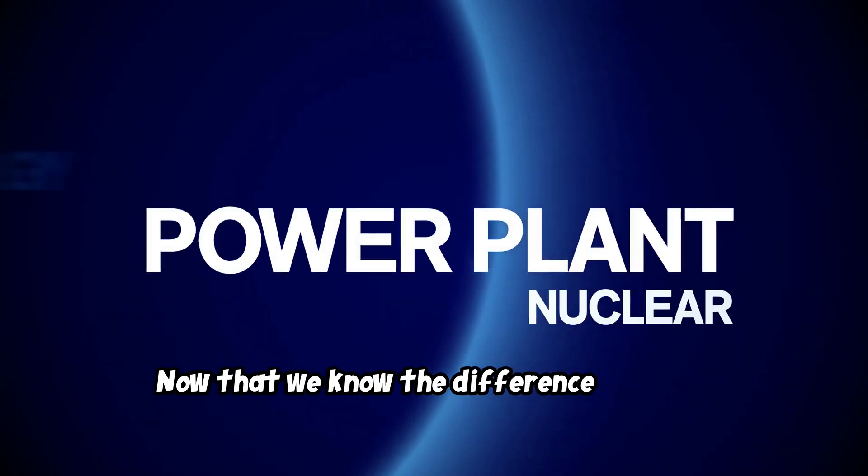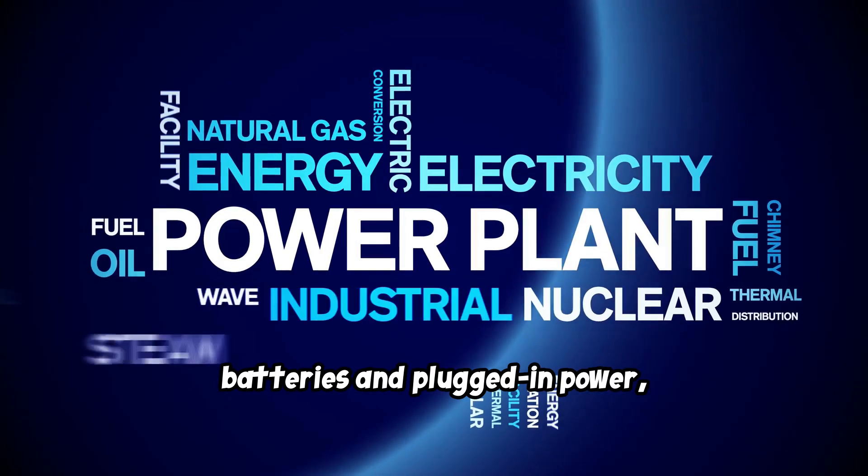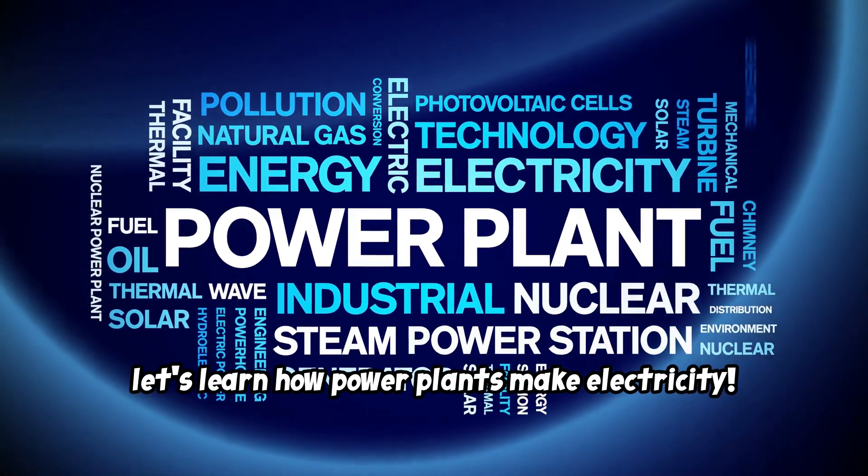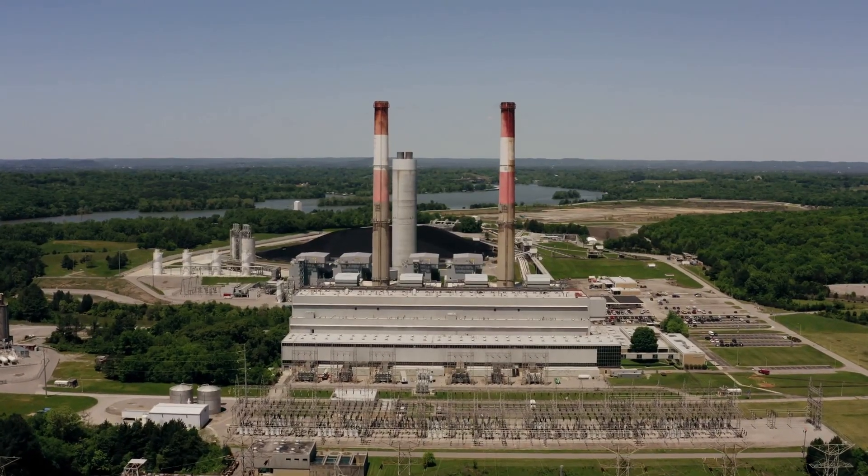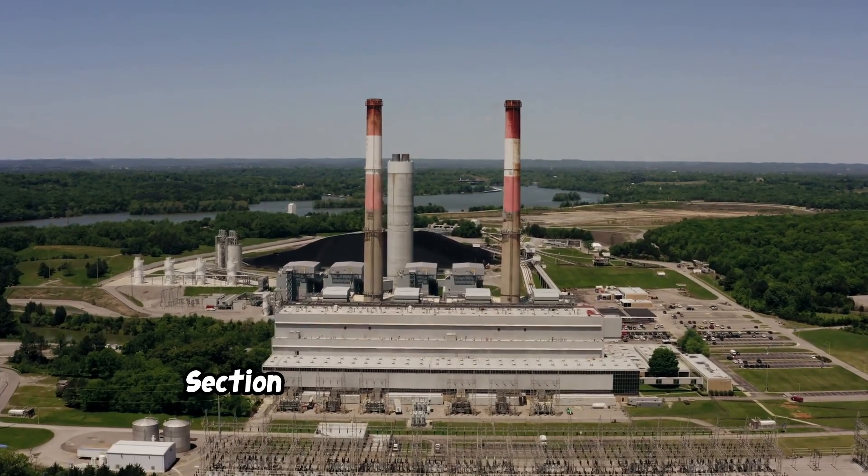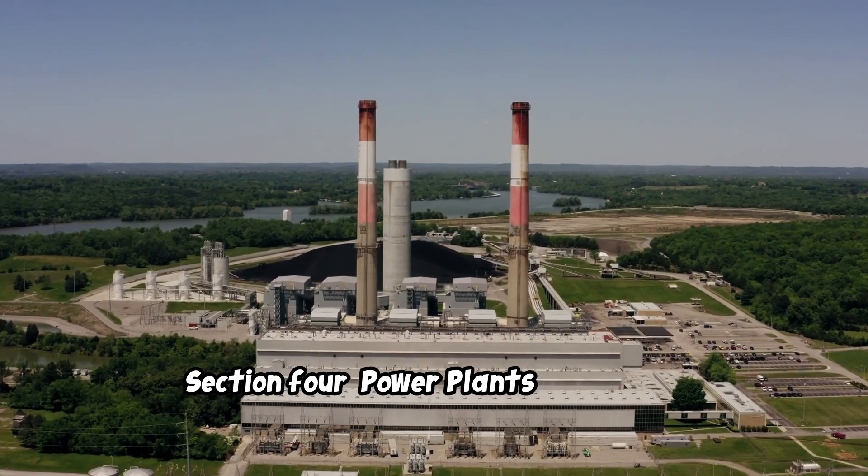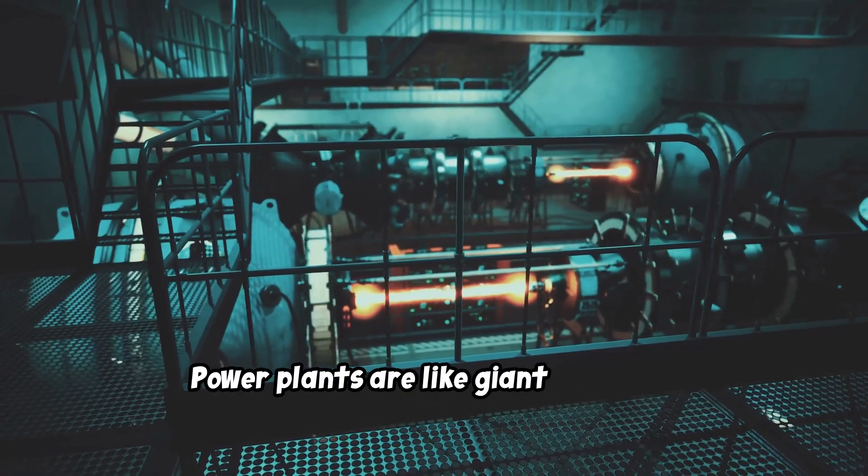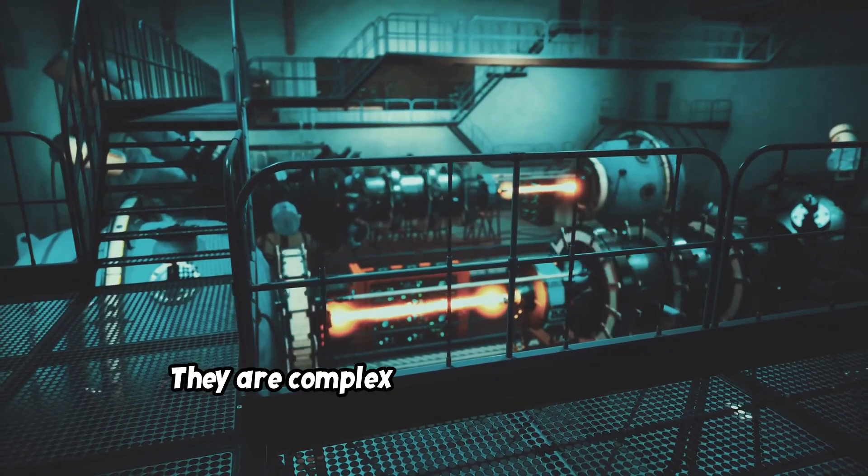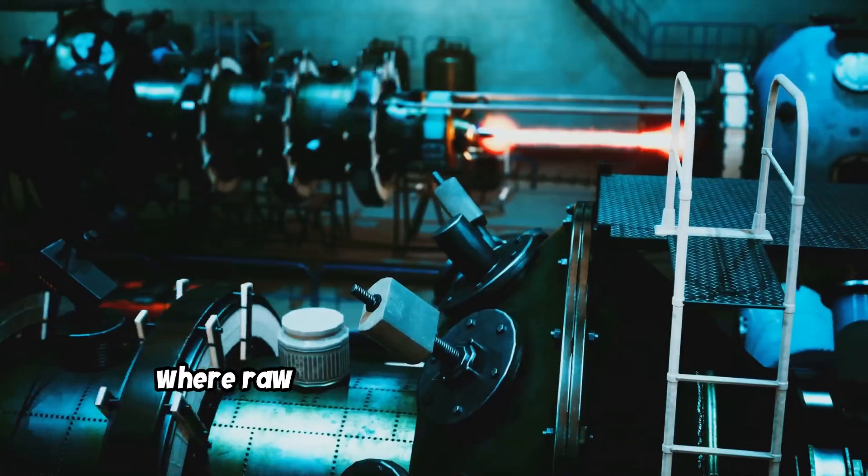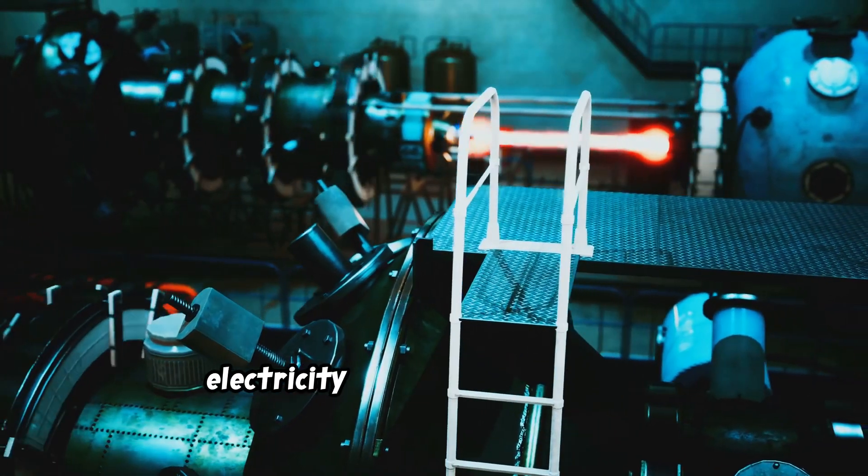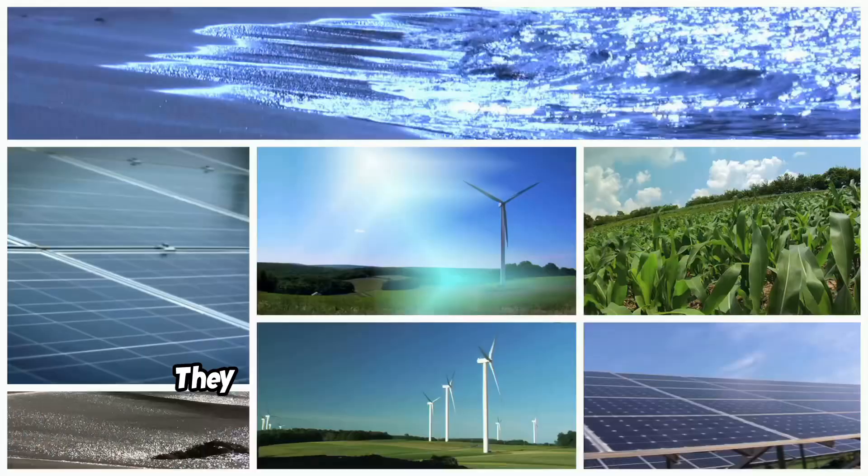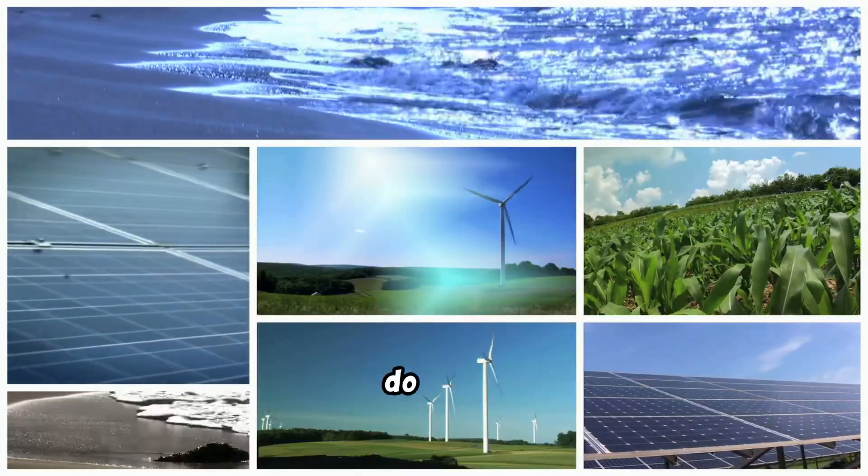Now that we know the difference between batteries and plugged in power, let's learn how power plants make electricity. Power plants are like giant factories that make electricity. They are complex and fascinating places where raw energy is transformed into the electricity that powers our homes, schools, and businesses. They use different sources of energy to do this.